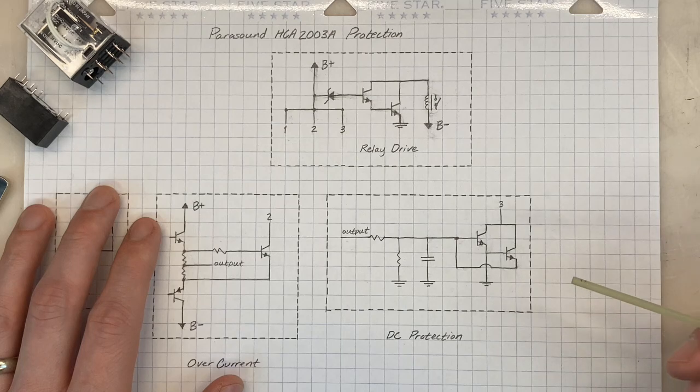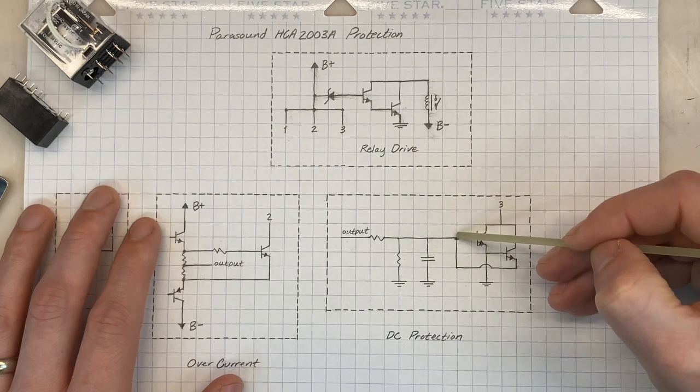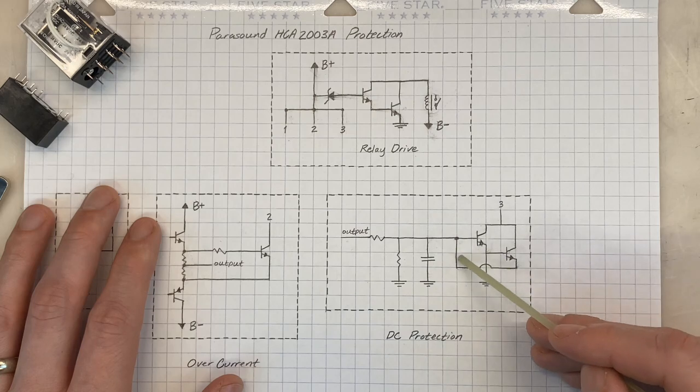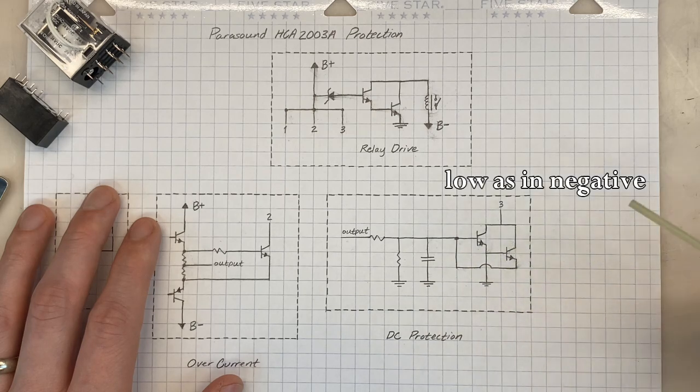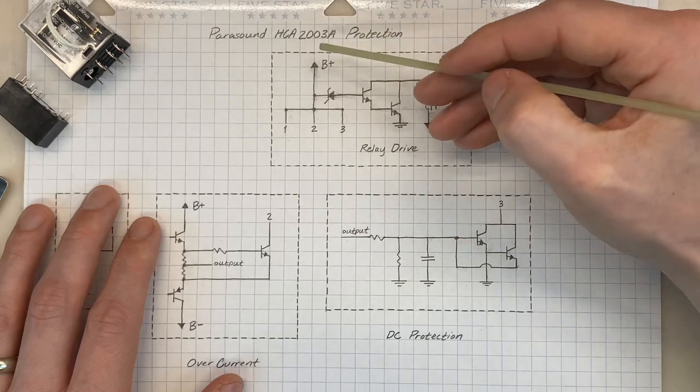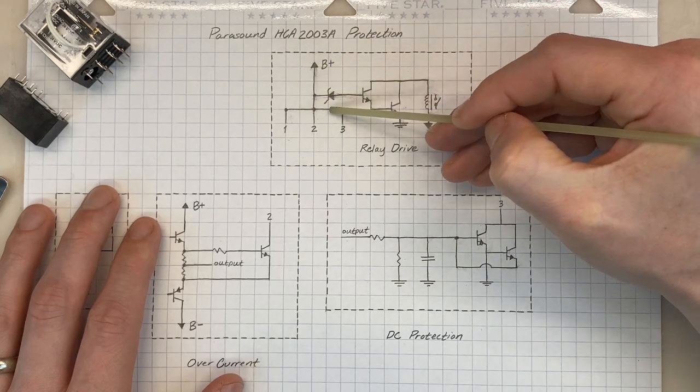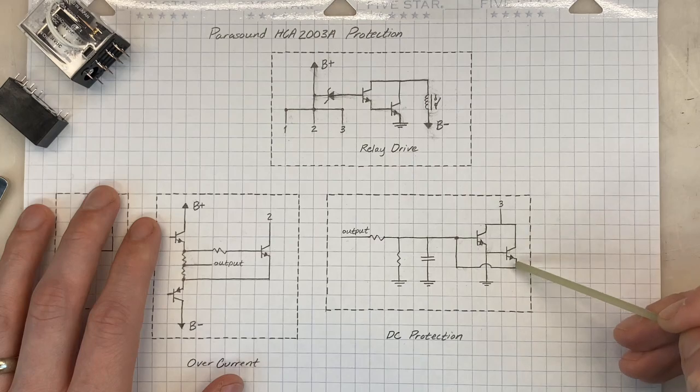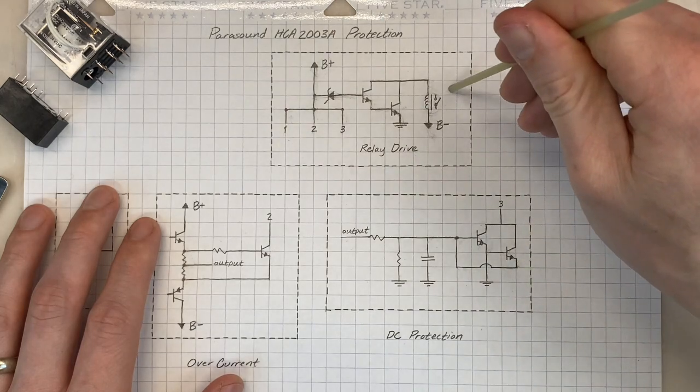But in a fault condition, if the DC voltage at the output is sufficiently high, this transistor will turn on. Or if it's sufficiently low, this transistor will turn on. If either of these transistors is on, we now have a current path from our positive supply rail through node 3, through the enabled transistor, again bypassing the relay drive circuit.